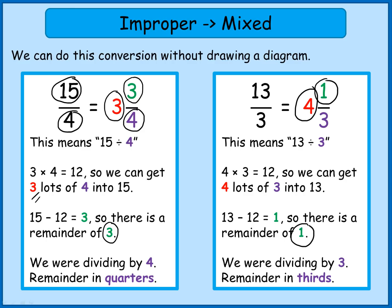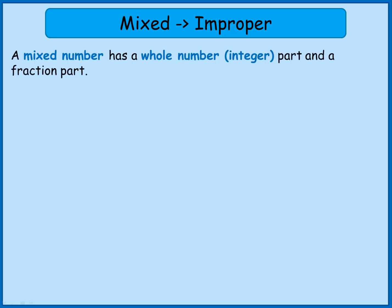If we can change improper to mixed, we should be able to go the other way — changing mixed to improper. A mixed number has a whole number part (you might see the word integer used) and a fraction part that is smaller than 1. We'll look at changing 2 and 2 thirds, which is 2 wholes and 2 thirds, into an improper fraction. Let's look at it with a diagram first.